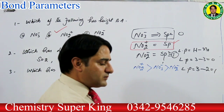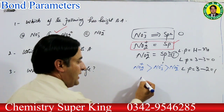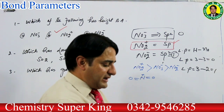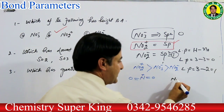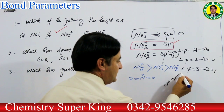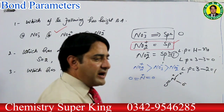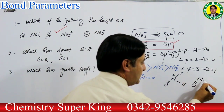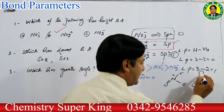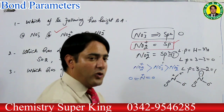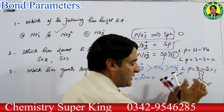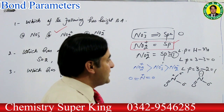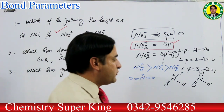Structure کے حساب سے: NO2⁺ linear ہے (bond angle ≈180°)، NO3⁻ trigonal planar، NO2⁻ میں lone pair ہے جو bonds کو زیادہ repel کرتا ہے اور bond angle decrease کر دیتا ہے۔